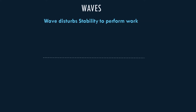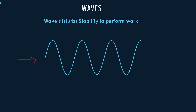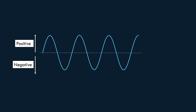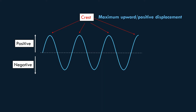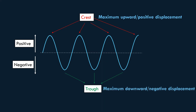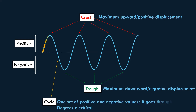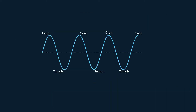When light is not traveling through space, the space is stable. Whenever a light wave travels through space, it disturbs the stability to perform some work. A light wave has two sections: the high side and the low side. The high side is called the positive displacement and the low side is called the negative displacement. The maximum peaks of the high side are called the crest, while the minimum peaks of the low side are called the valleys. One positive section and one negative section together is called one wave or one cycle. The height of the crest and the height of the valley is called the amplitude of a wave.